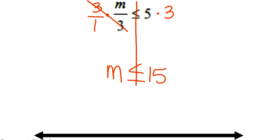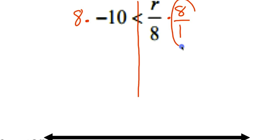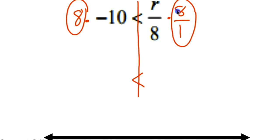The next example is negative 10 is less than r divided by 8. I'm going to multiply by 8 on both sides. Now you might think: there's a negative 10, so I should flip the sign — but you would be incorrect. Do not flip the sign unless the integer you are multiplying or dividing on both sides is negative. The negative is only on the left; I'm not multiplying both sides by a negative. The 8s cancel, leaving r, and 8 times negative 10 is negative 80. So negative 80 is less than r.